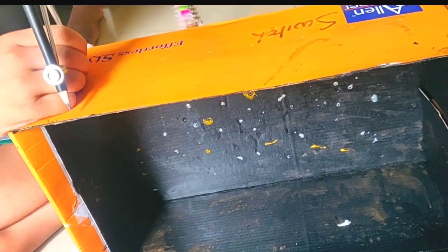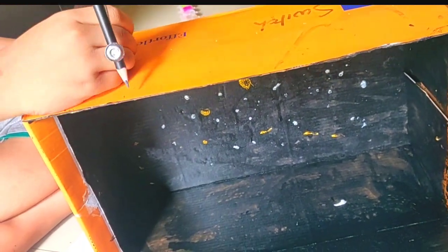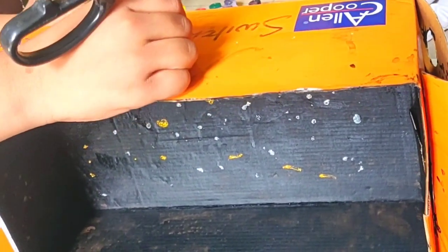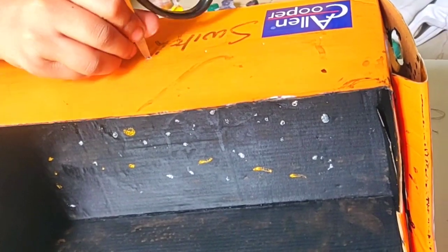Now make eight holes on the upper side of the box with the help of a compass. Now widen the holes with the help of scissors.